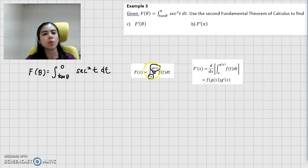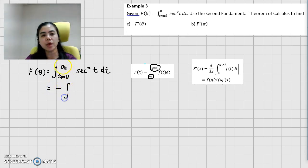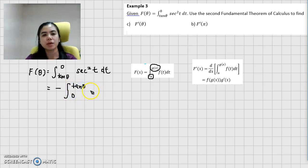The idea is to follow the sequence of the general form. So if you want to flip the order, what you have to do is add a negative in front of the integration. If you add a negative in front of the integration, the interval will flip. So we have zero at the bottom and tangent theta at the top.